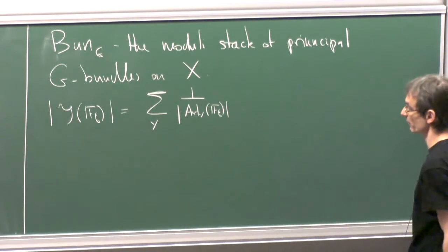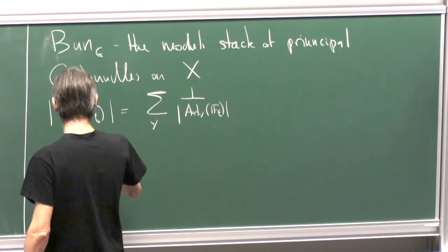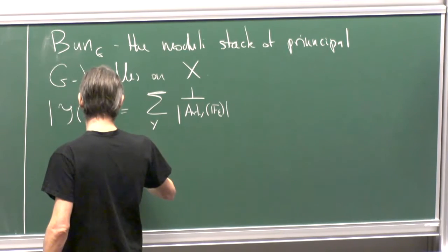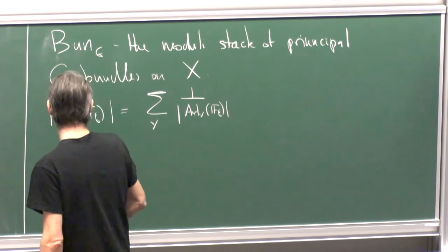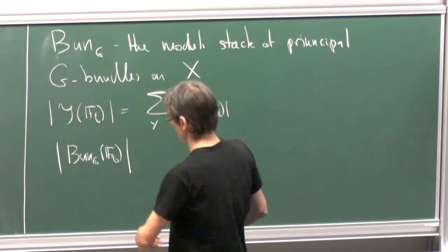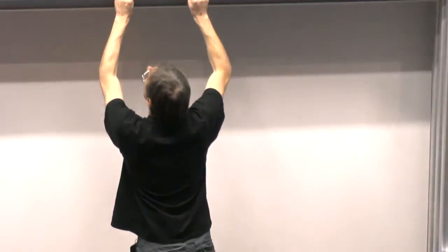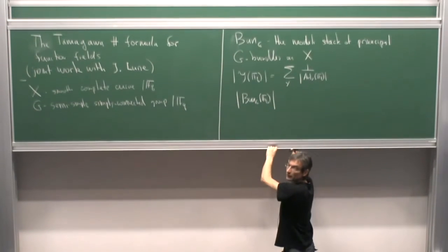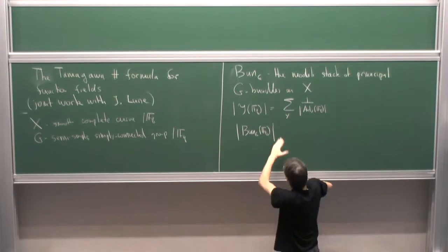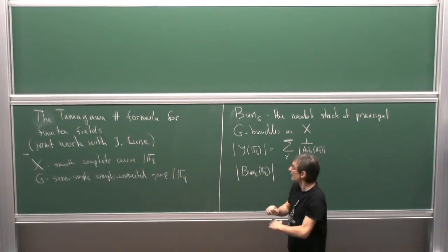BunG is not quasi-compact, so this sum will be infinite and one runs into a convergence problem. However, it's a classical fact that this thing converges when the group is semi-simple. So our interest is in counting bundles.